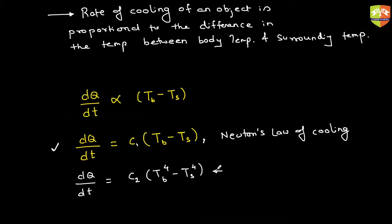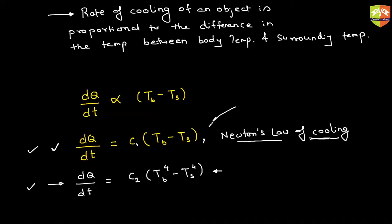DQ/DT — this is actually a law. What Newton found is experimental: he plotted a graph and found this result. Stefan-Boltzmann's came with some logic. Both equations are correct, but there is an assumption in Newton's Law of Cooling.